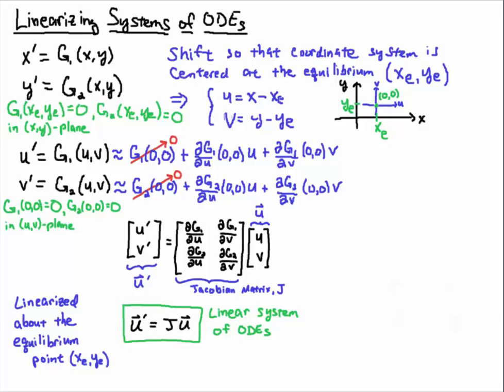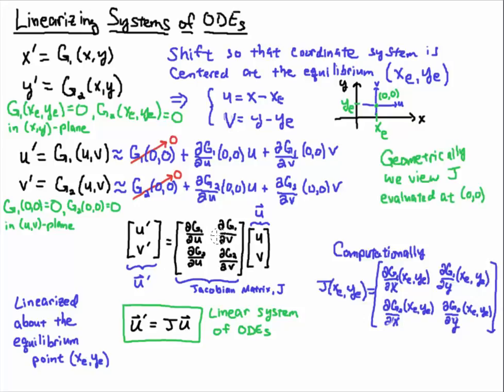Before I wrap this video up, I just want to say one more thing. When we're computing this Jacobian matrix, geometrically we're viewing it as being evaluated at (0,0), centered in this UV coordinate system. But when we actually do the computations, you're going to be computing them in the x,y coordinate system. You'll be taking the partials with respect to x and y, and then plugging in the equilibrium points. That is equivalent to what we've done here.